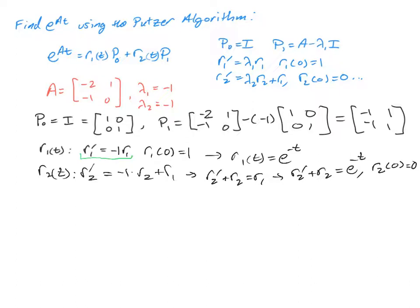So this equation is linear, and we can use integrating factors to solve it. And so if we do integrating factors, our mu of T is just going to be E to the integral of 1 DT, so that's E to the T. So we have an E to the T R2 prime plus E to the T R2 is equal to E to the T times the R1 we found, which was E to the negative T. So that's 1.